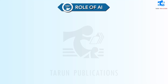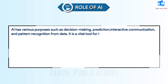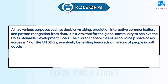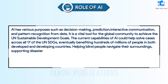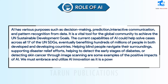Role of AI: AI has various purposes such as decision-making, prediction, interactive communication, and pattern recognition from data. It is a vital tool for the global community to achieve the UN Sustainable Development Goals. The current capabilities of AI could help solve cases across all 17 of the UN SDGs, eventually benefiting hundreds of millions of people in both developed and developing countries. Helping blind people navigate their surroundings, supporting disaster relief efforts, helping to detect the early stages of diabetes, or detecting skin cancer through image scanning are some examples of the positive impacts of AI. We must embrace and utilize AI innovation as it is a powerful weapon against most of the barriers that hinder the achievement of SDGs.